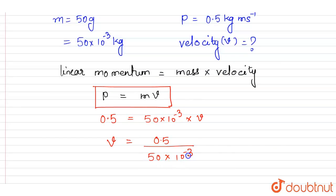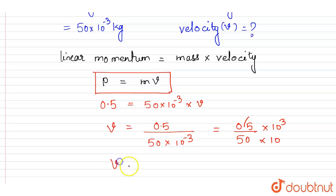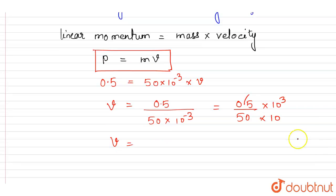So from this equation, velocity v is equal to 0.5 divided upon 50 into 10 to the power minus 3. So this is equal to 0.5 divided upon 50 into 10 to the power 3.